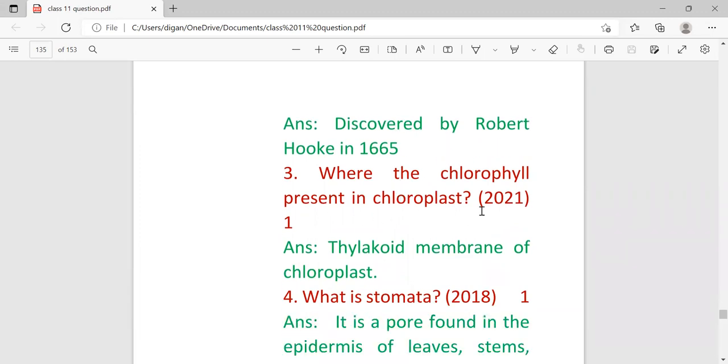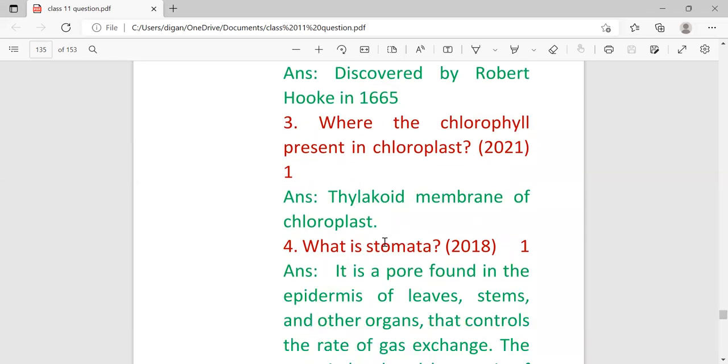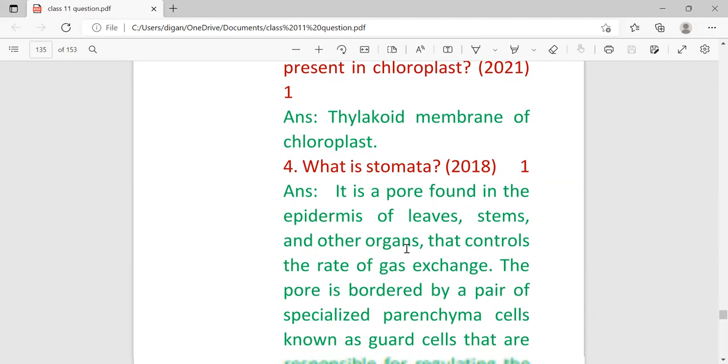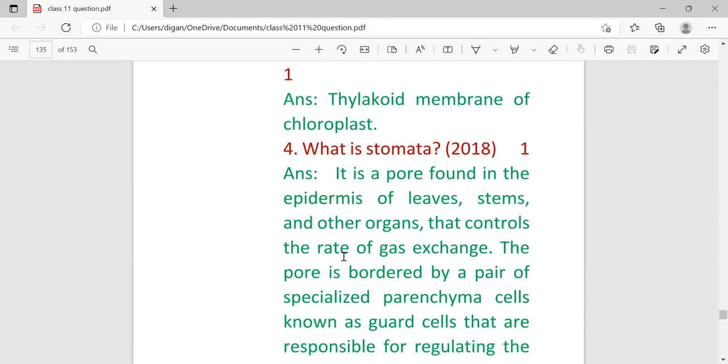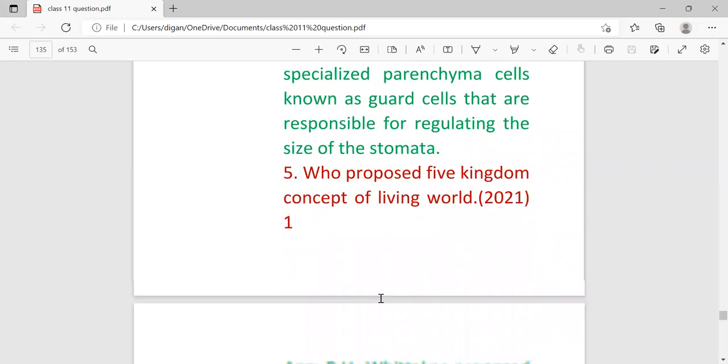Where is the chlorophyll present in chloroplast? It is present in the thylakoid membrane of chloroplast. This last came in 2021, and since 2021 and 2020 exam was not taken, there is a high chance that this question may come this year. Then what is stomata? It is a pore found in epidermis of leaves, stems, and other organs that controls the rate of gas exchange.